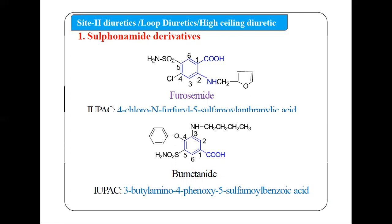Sulfonamide derivatives contain the sulfonamide group. The most common and important example is furosemide. The structure of furosemide has a benzene ring with a carboxylic acid group, an NH₂ group, a sulfonamide group, a chloro group, and a furan ring also attached. Numbering starts from the carboxylic acid — positions 1 through 6.